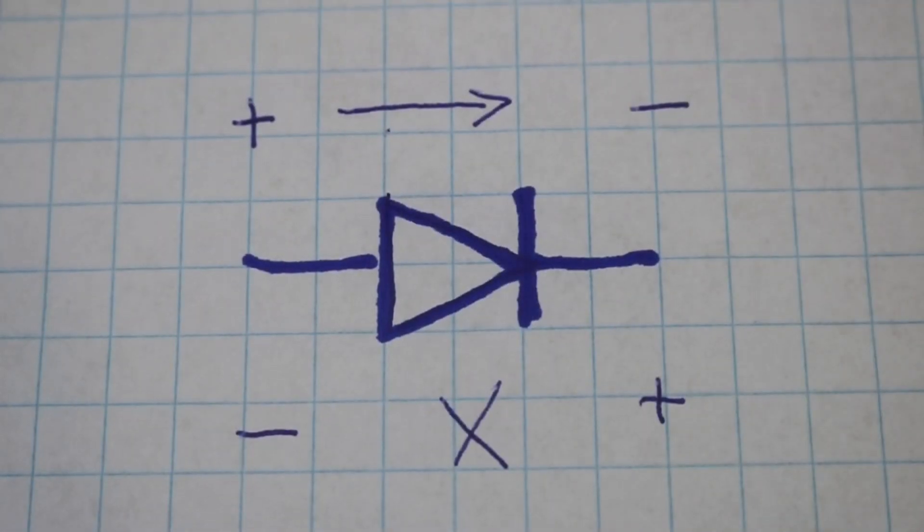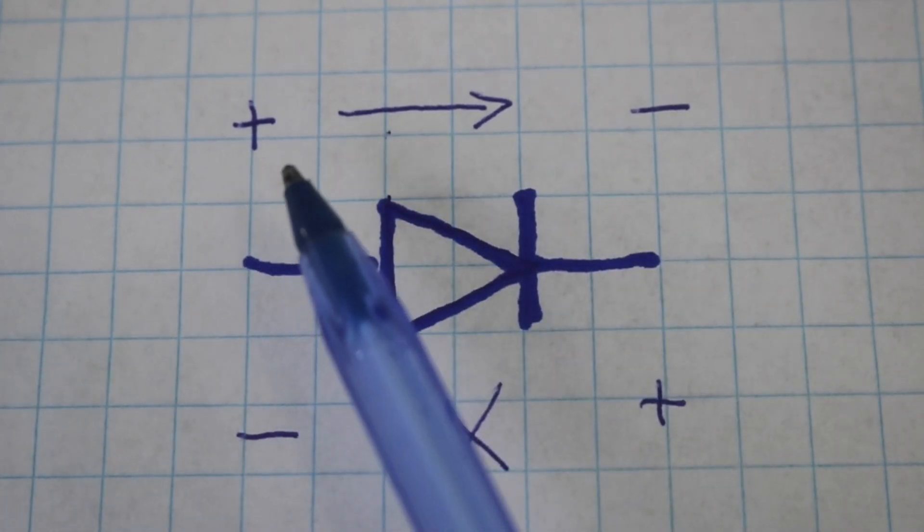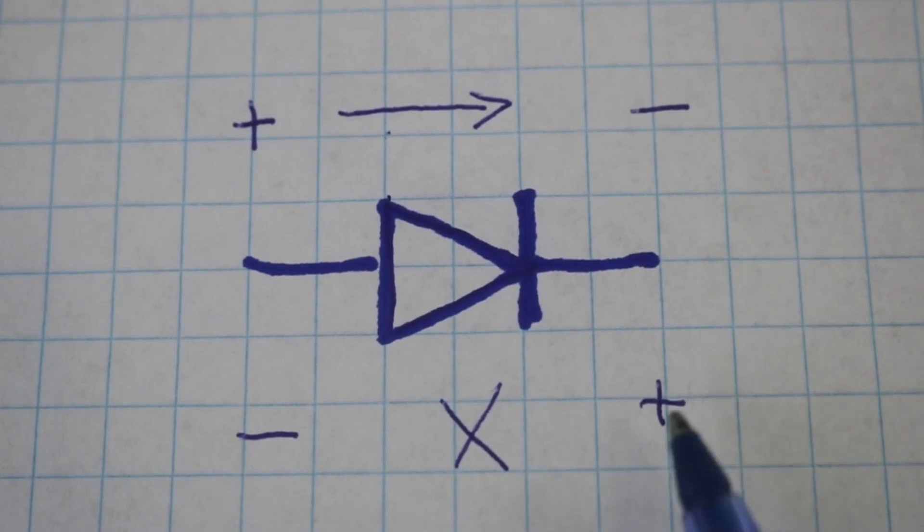Here we can see, if we connect negative in the band side and positive to the other side, the current will flow. With the polarity backwards, no current flows through the diode.